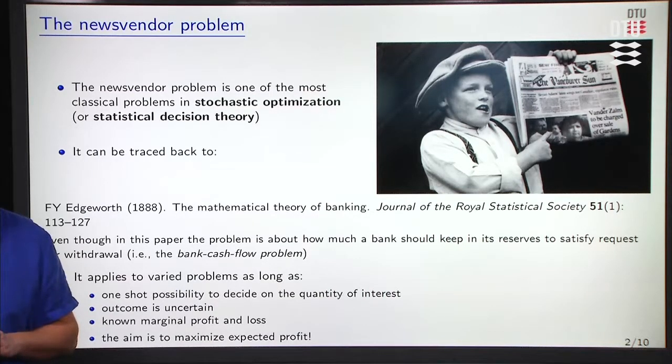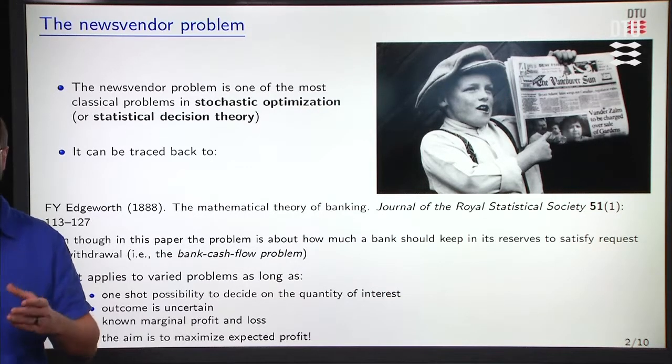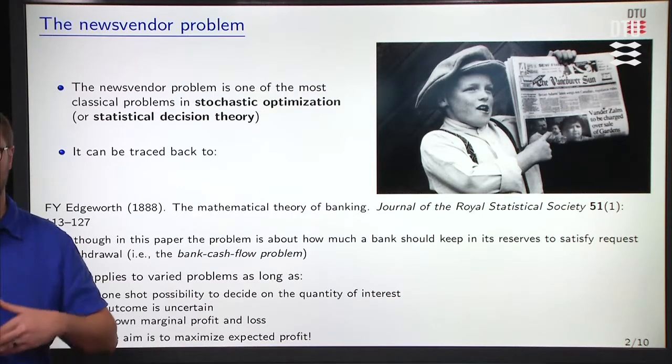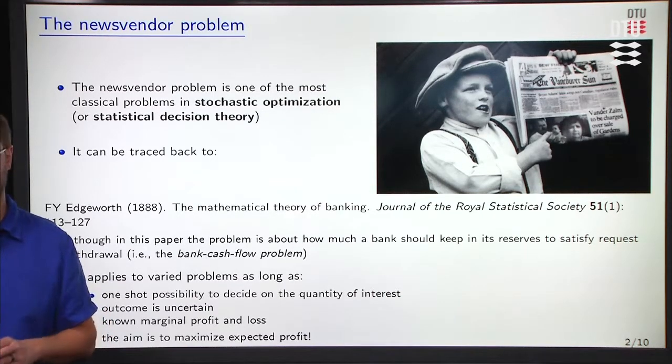Finally, the aim of this newsvendor is to maximize expected profit. There, we should clarify the fact that maximizing expected profit means that in view of the uncertainty, we want to maximize the profit as an average over all the potential uncertain outcomes.